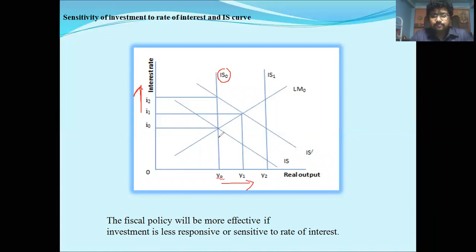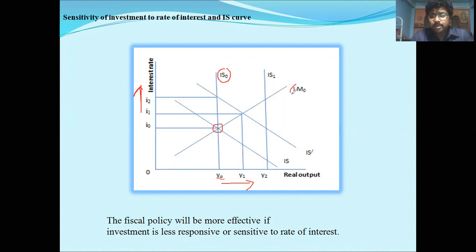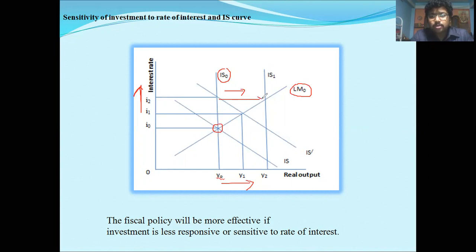If investment increases, the IS curve will shift to the right. This is the initial equilibrium point where the goods market as well as the money market is in equilibrium. If there is an increase in investment, IS-zero shifts to the right and it will become IS-one.